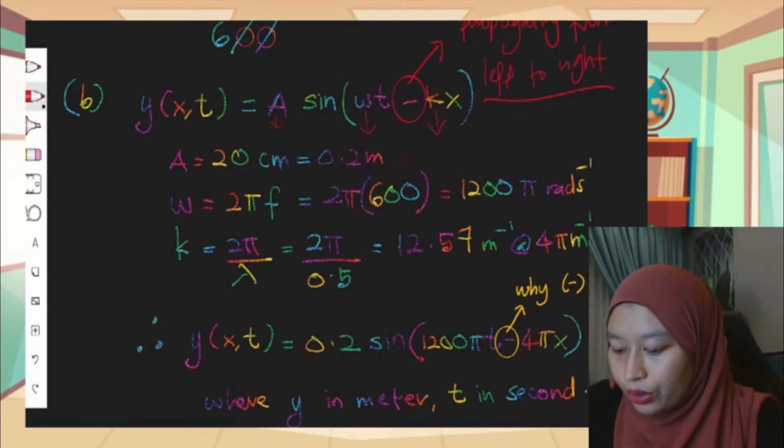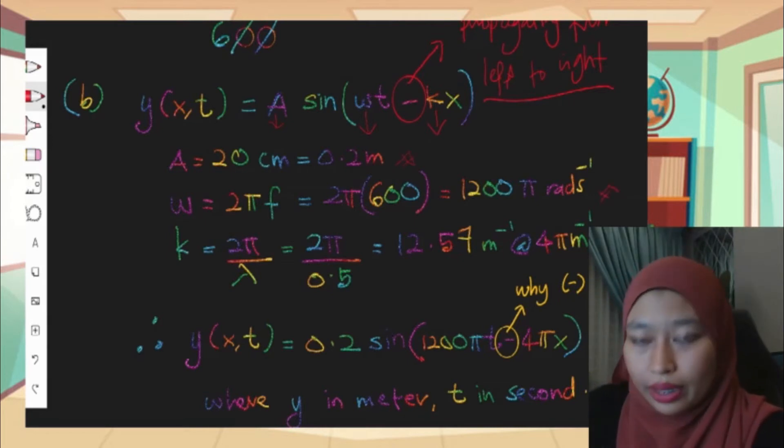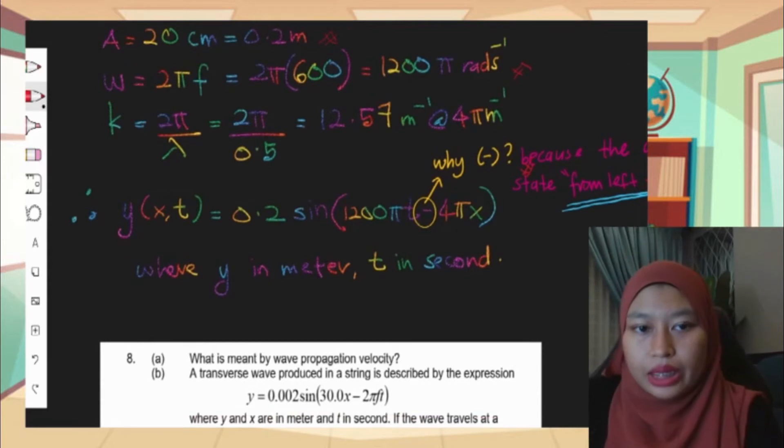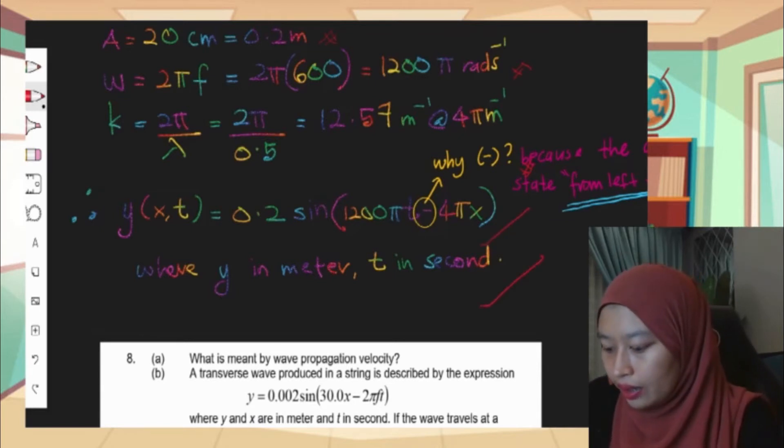That is why I put here the value of A is 20 cm, and we change it to SI unit meter, therefore we got 0.2 meter. Omega is 2 pi f, so we calculate omega and get 1200 pi. K also we can calculate. After we got all those values, just write the equation and put all the values in the equation.